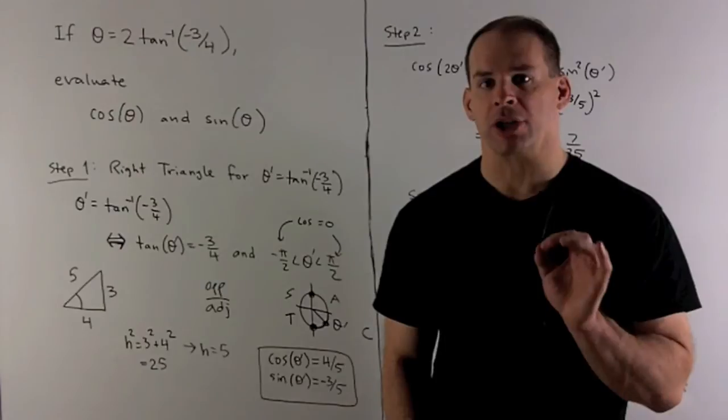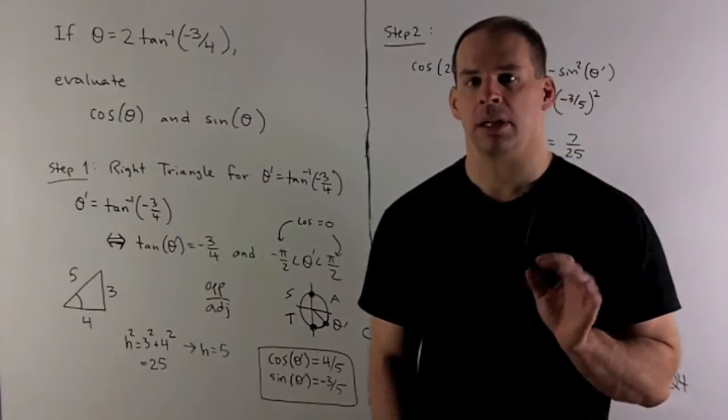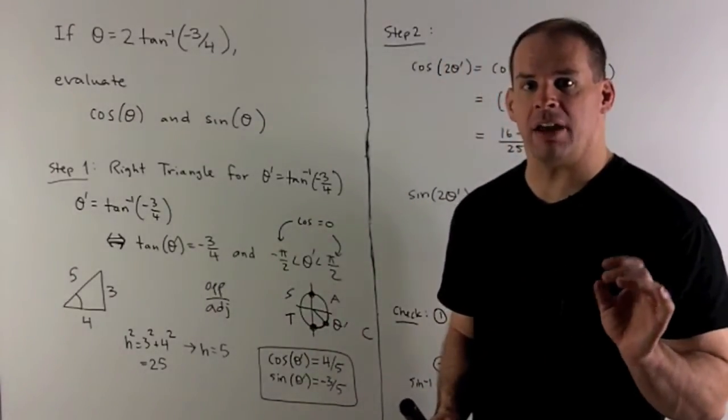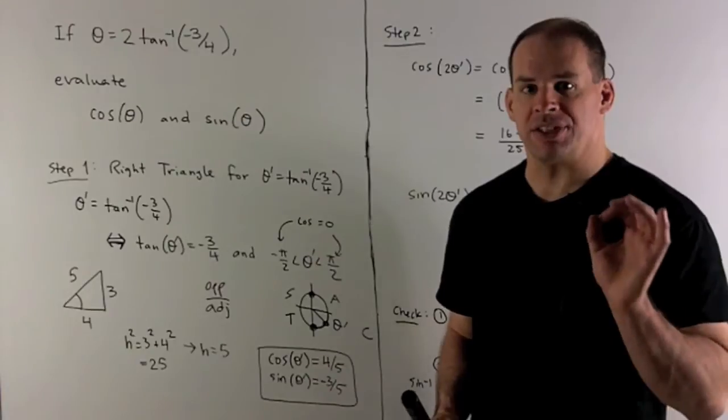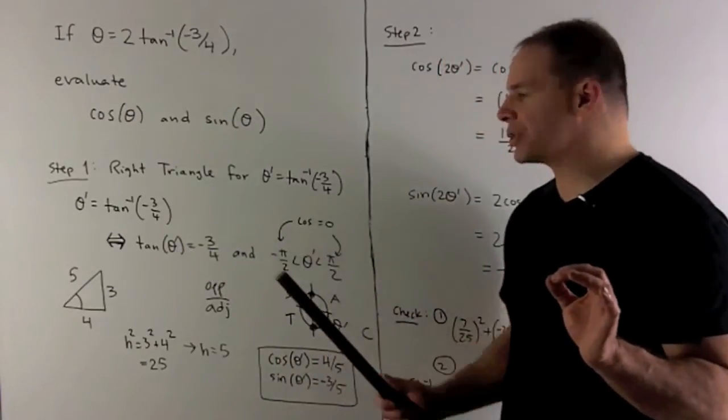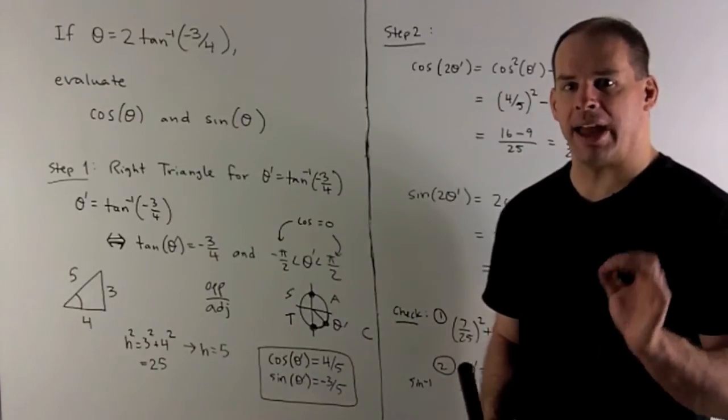I'm going to set up the right triangle, and then I'm going to find the sine and cosine that goes with this angle. Now, we have theta prime equals inverse tan of minus three-fourths. That's the same as saying tan of theta prime equals minus three-fourths, and the angle is between minus pi halves and pi halves.